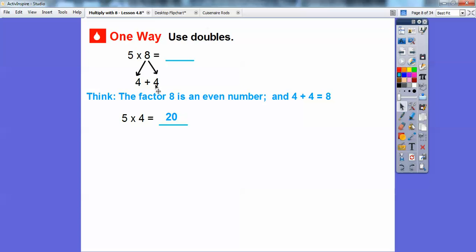And since we've got another 5 × 4 because it's 4 + 4, we double that number. Twenty doubled is forty. Therefore, 5 × 8 is twenty doubled, which is forty. That's one way to do it.